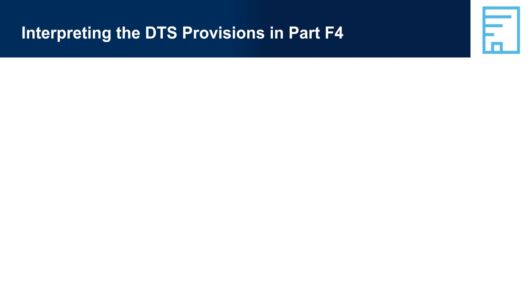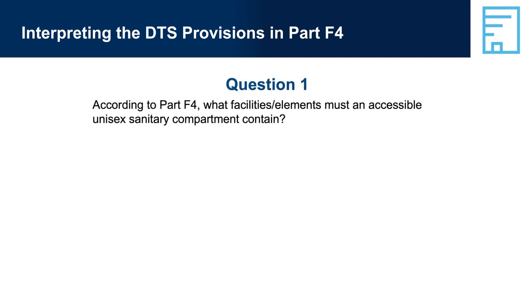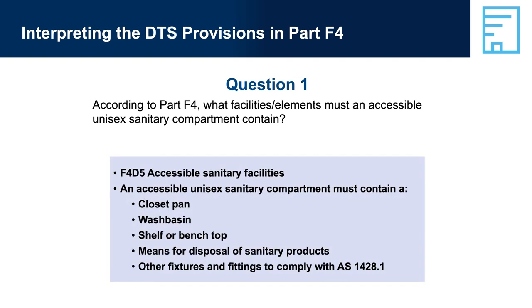Interpreting the DTS provisions in Part F4. Question 1: According to Part F4, what facility elements must an accessible unisex sanitary compartment contain? Answer: F4D5, Accessible Sanitary Facilities — an accessible unisex sanitary compartment must contain a closet pan, wash basin, shelf or benchtop, means of disposal of sanitary products, and other fixtures and fittings must comply with AS1428.1.